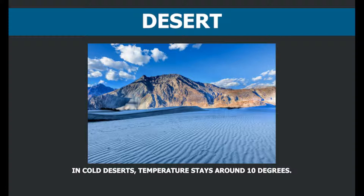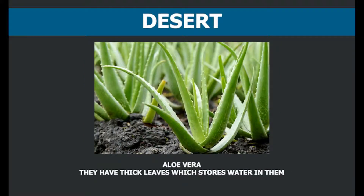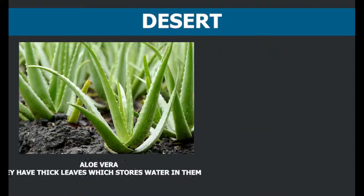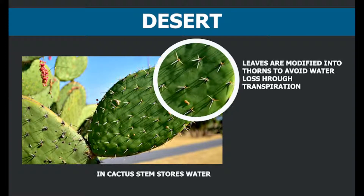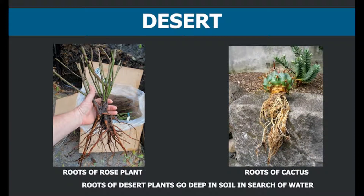Since water availability is limited in the desert habitat, plants here adapt to it in various ways. For example, plants in desert habitat have thick leaves that store more water and minerals. Plants like cactus store water in their stem, and their leaves are reduced to spines. This minimizes water loss due to transpiration. Roots of desert plants go very deep in the soil in search of water.